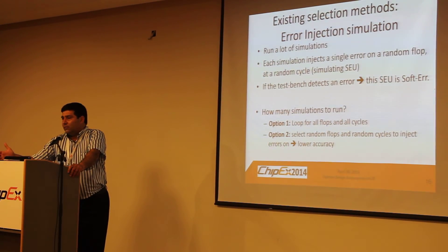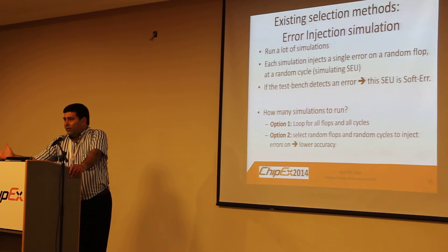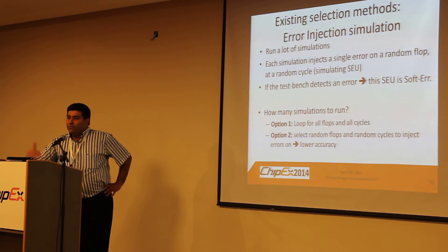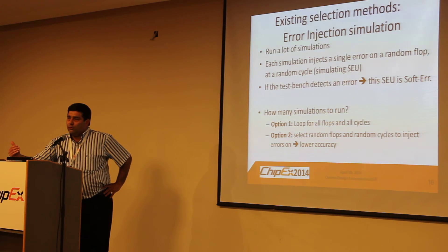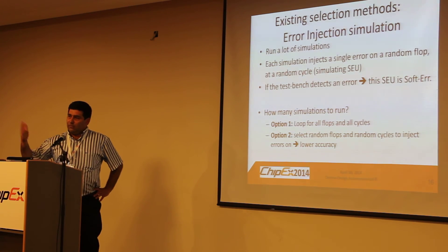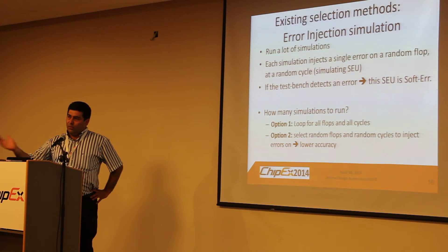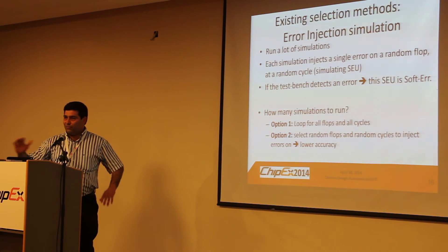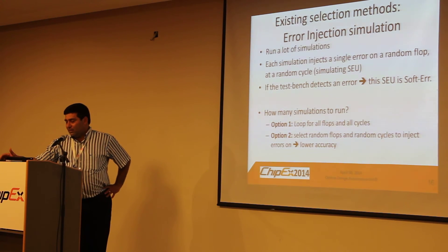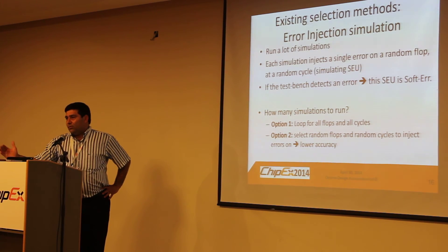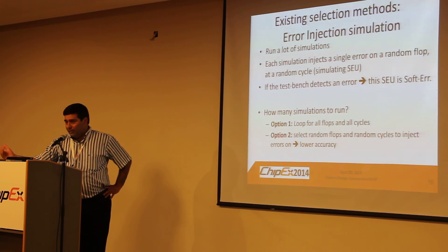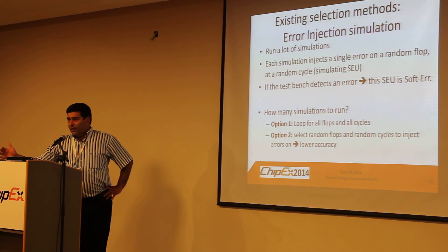You can do this either for all flops across all cycles — option one — but that's a huge number of simulations. For 300,000 flops over 100,000 cycles, the count is enormous. What we see customers doing instead is lowering the sample rate: sampling fewer flops and fewer cycles to get an indication of which flops or which areas of the chip are more sensitive.